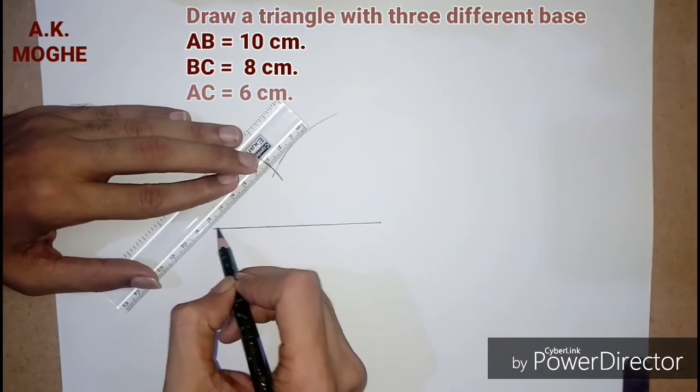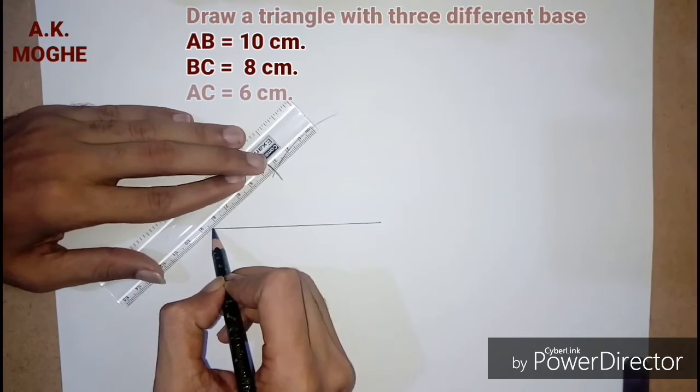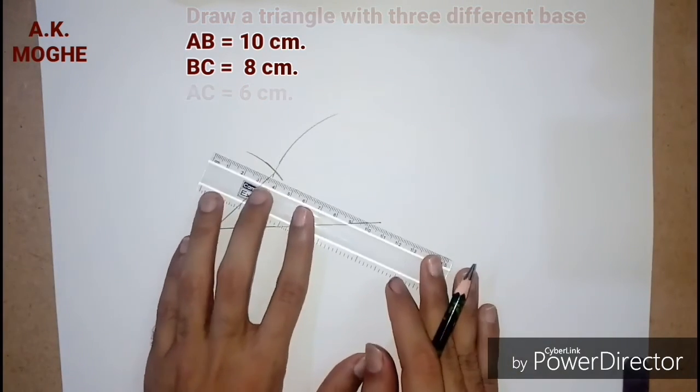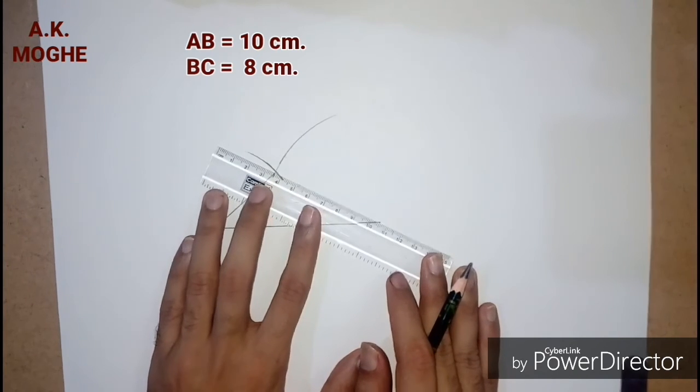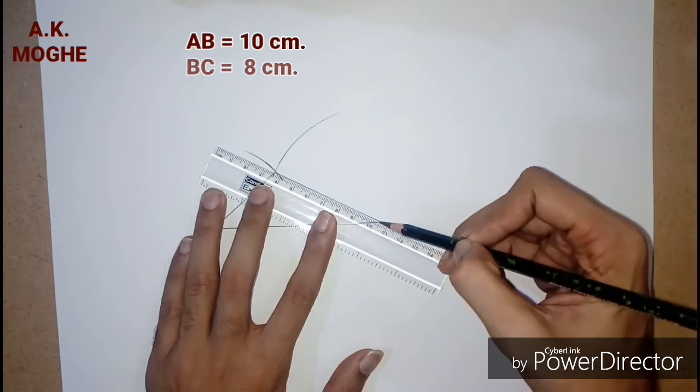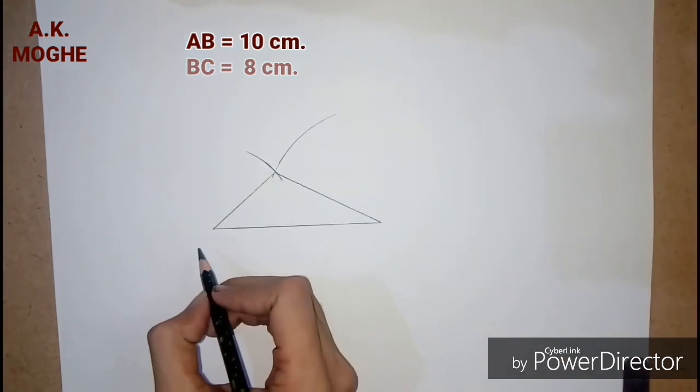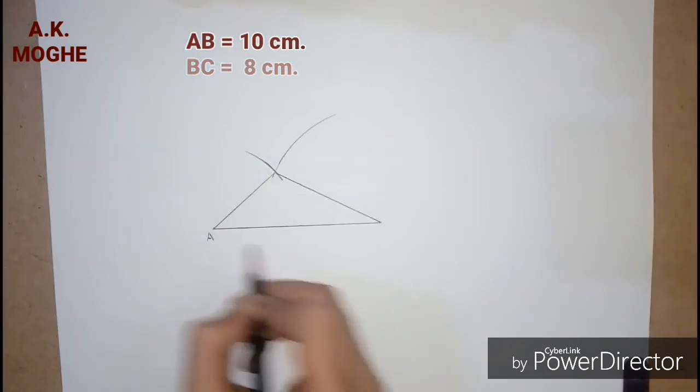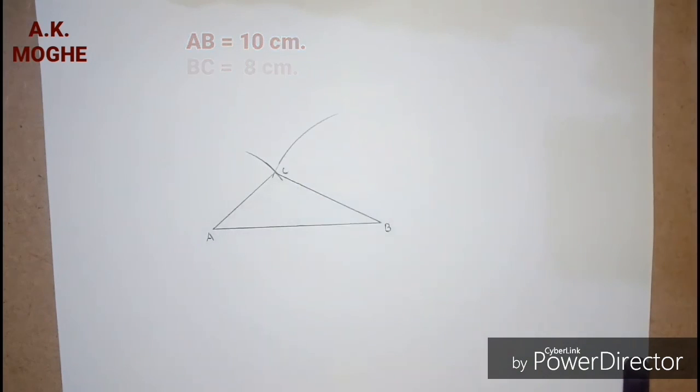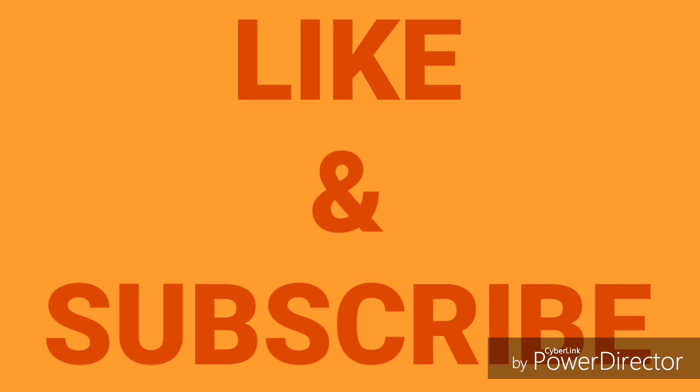Here is triangle ABC ready with side AB 10 centimeter, BC 8 centimeter, and AC 6 centimeter, an uneven side triangle. In the next video we will see how to draw quadrilaterals. Like and subscribe the channel. I hope you will learn something.